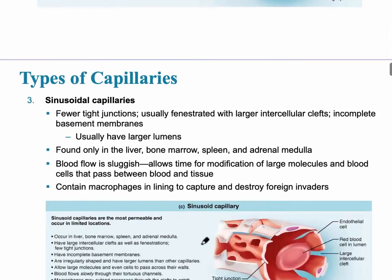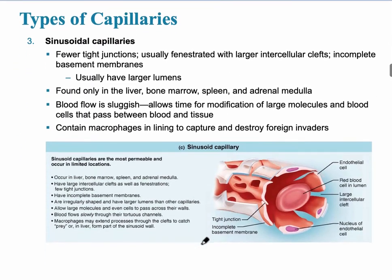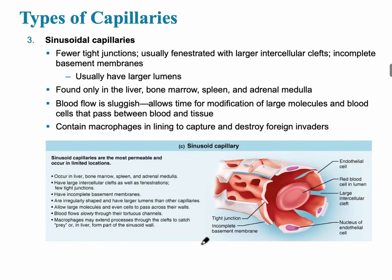There's active absorption of nutrients that occur in the GI tract with these capillaries. The third type of capillary is referred to as the sinusoidal capillary, and it has very few tight junctions. It is fenestrated, like the last one, but it's even more porous — it's the most porous of all three types.